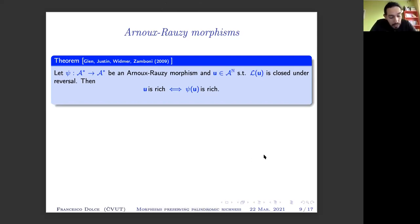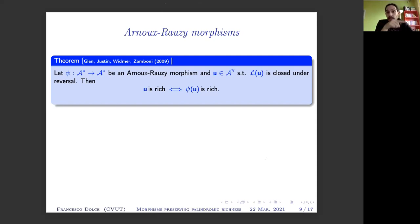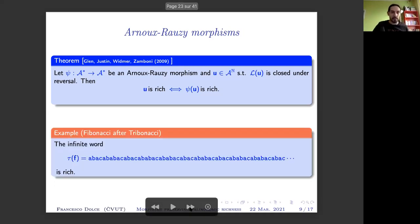Already on Arnoux-Rauzy morphisms we have interesting results about richness: whenever we consider an Arnoux-Rauzy morphism and an infinite word whose language is closed under reversal, the word is rich if and only if its image under the morphism is rich. This means not only does psi preserve richness, but in some sense the inverse also preserves richness. This was proved by Amy Glenn, Jacques Justin, Steve Widmer, and Luca Zamboni. As an example: starting with the Fibonacci word, which is rich, and applying the Tribonacci morphism, we obtain another word — different from Fibonacci — that is still rich.